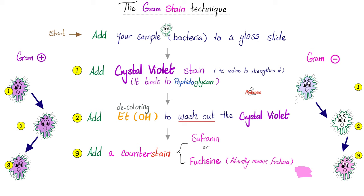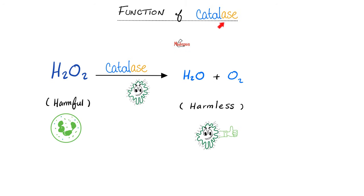The purple stain is called crystal violet. The pink stain is called eosin — from fuchsia — which is the counter stain, counter to the purple. The function of the catalase enzyme is to break down the harmful hydrogen peroxide into harmless oxygen and water, to protect the bacteria. Bacteria is smart, protecting itself by having the catalase enzyme.